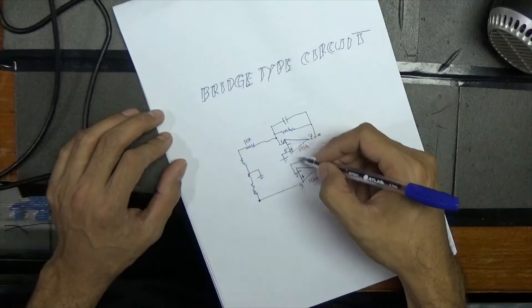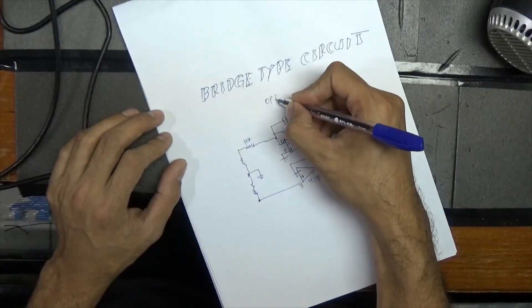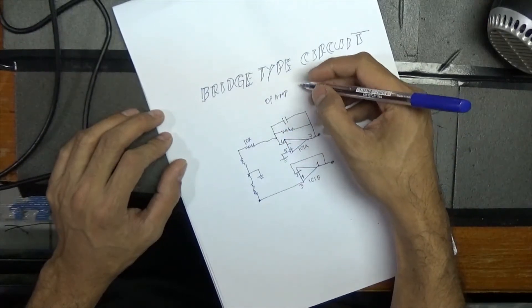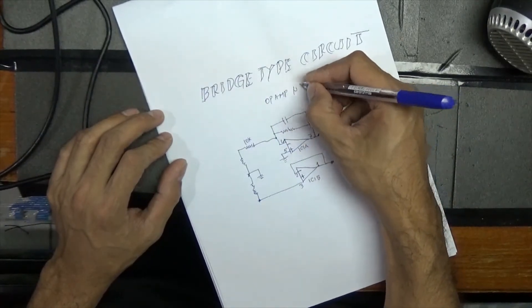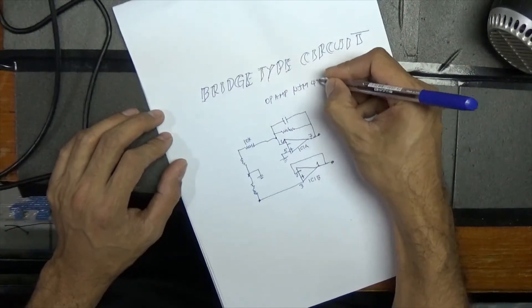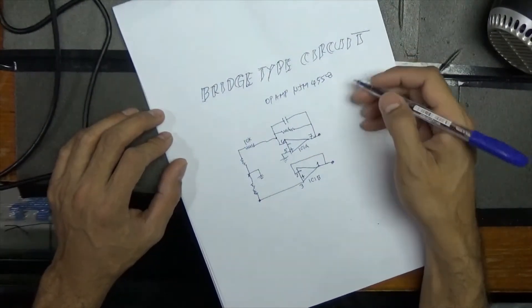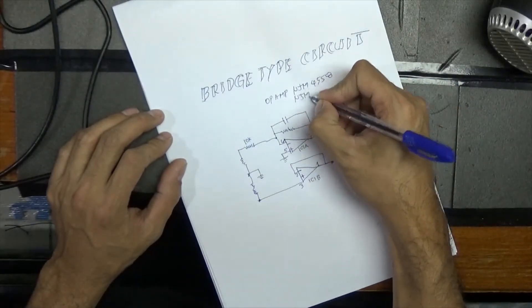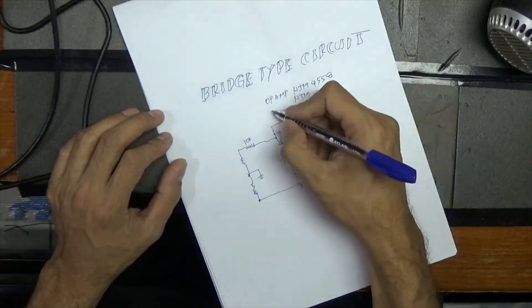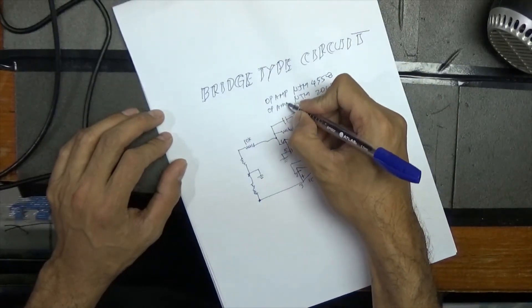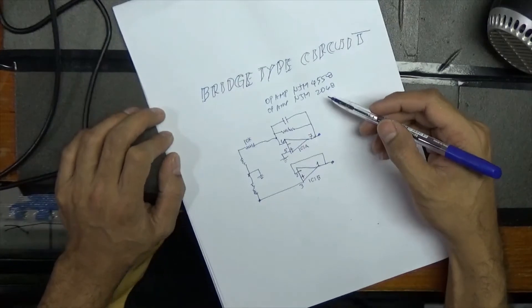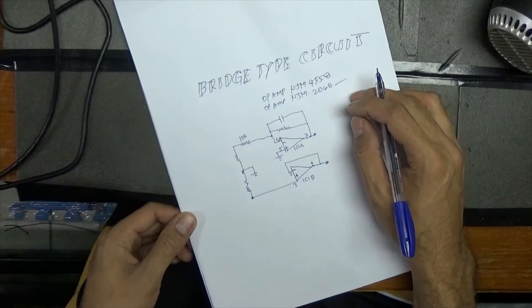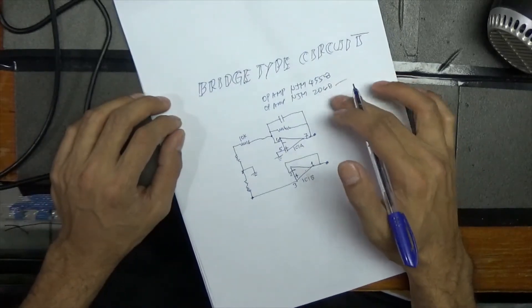This one is IC1B. Just select if you like NJM or 558 or NJM268. NJM268, this one is good, very good op-amp.